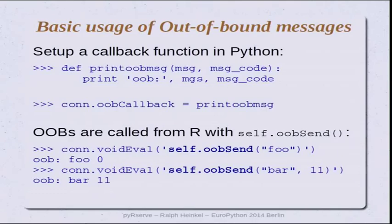To trigger a callback from R, you call the self.oob_send call — the 'self' is just a namespace thing in R. The first example just sends a message with no message code, and the message code is always zero by default. In the second call you can override the zero and send a more qualified message code. The next example will show why you'd want to do that.